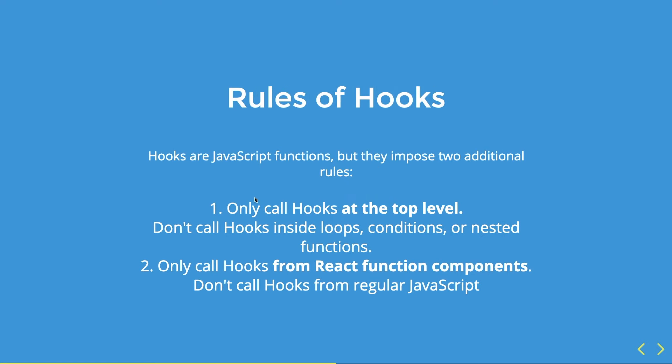We also have a few rules. Hooks are nothing more than JavaScript functions, but there are two important rules the React team imposed so that hooks can work properly. First: only use hooks at the top level — don't call hooks inside loops, conditions, or nested functions. This ensures hooks are called in the same order each time a component renders, which is what allows React to correctly preserve the state of hooks between multiple useState and useEffect calls. Second: call hooks only from React function components or from custom hooks — not from regular JavaScript functions. By following this rule you ensure that all stateful logic in a component is clearly visible from its source code.